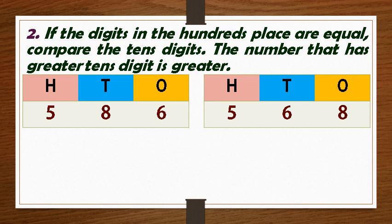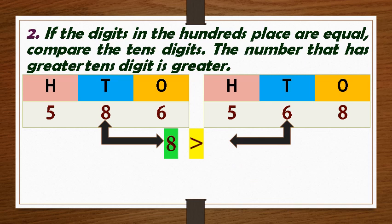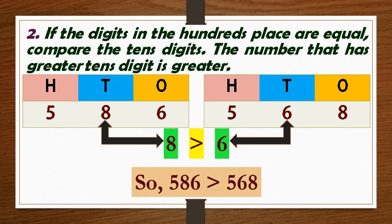If the digits in the hundreds place are equal, compare the tens digits. For example, in 586 and 568, hundreds digits are equal. Further, when we compare the tens place of both the numbers, the tens digit 8 in 586 is greater than tens digit 6 in 568. So, 586 is greater than 568.